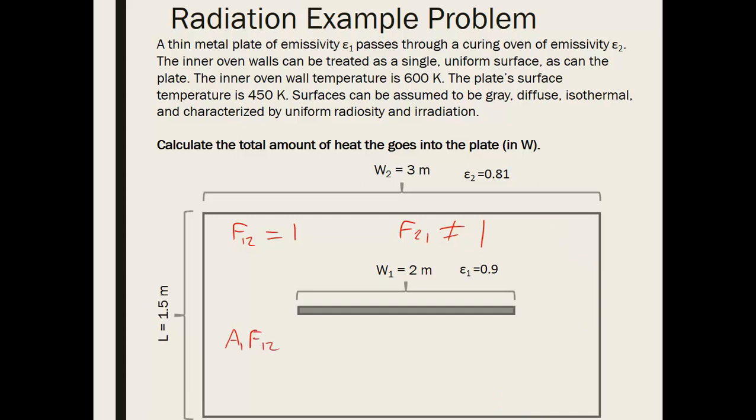So the area of surface one multiplied by the view factor from one to two is going to be equal to A2 times F21. So now this gets simplified and we can just solve knowing what F12 is.